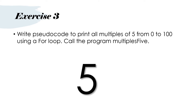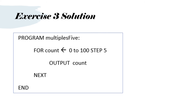Here's an example for you to practice. Write pseudocode to print all multiples of 5 from 0 to 100 using a FOR loop — call the program multiples 5. Please try this out for yourself; it's very important to practice. The solution: program multiples 5. FOR count, with the arrow from 0 to 100, STEP 5. OUTPUT count, then NEXT, then END.